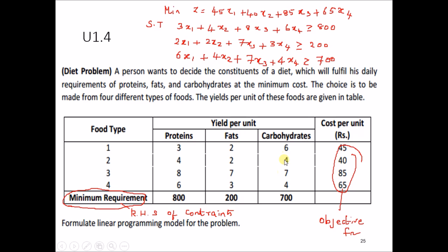The third constraint is 6x1 plus 4x2 plus 7x3 plus 4x4, which is greater than or equal to 700, where x1, x2, x3, x4 are all greater than or equal to 0. The key point here is: if you see any term with a minimum requirement, it should come on the right-hand side of the constraint for the minimization problem.